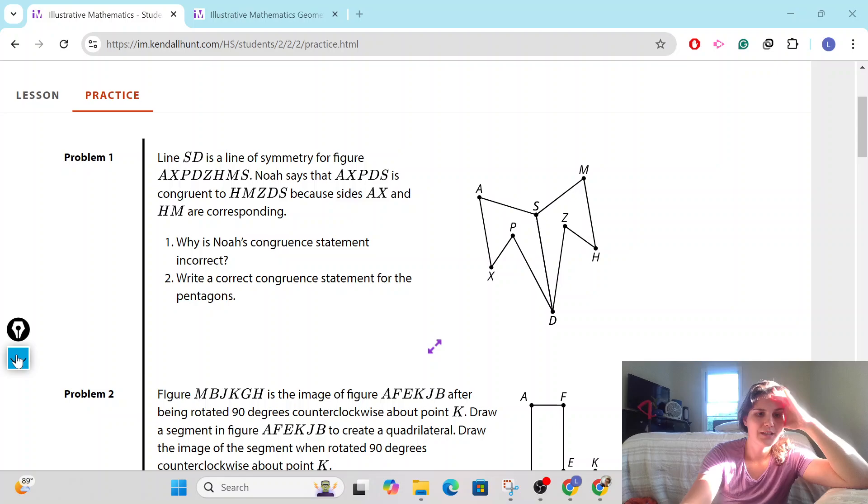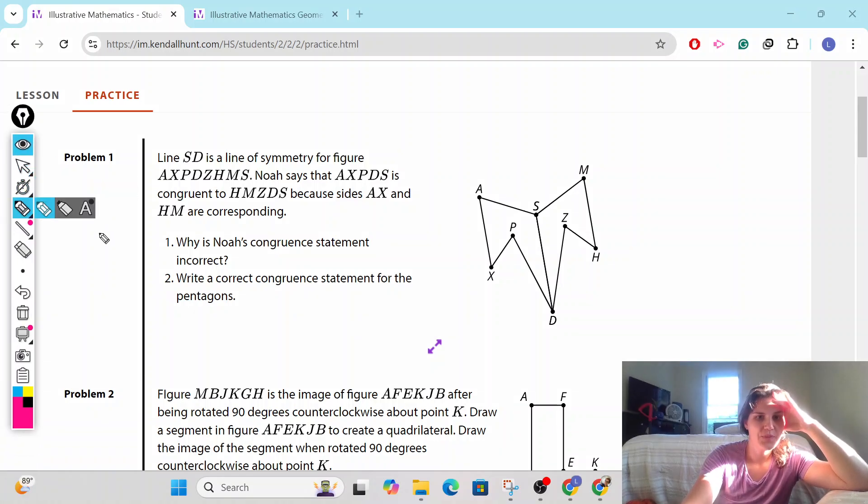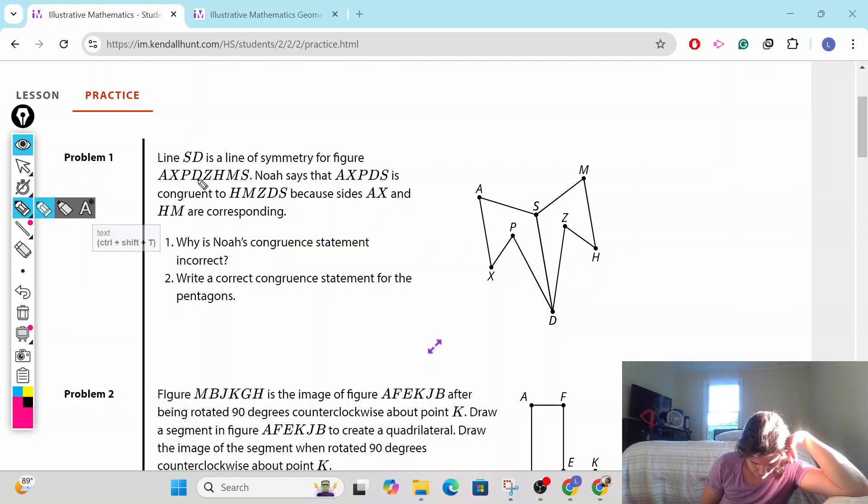Problem number one. Line SD is a line of symmetry for figures AXPDZHMS. Noah says that AX is congruent because AX and HM are corresponding. Why is Noah's congruent statement incorrect? So, the pentagon, we have A, X, P, D, Z, H, M, S. That's the whole shape that we're looking at right here.